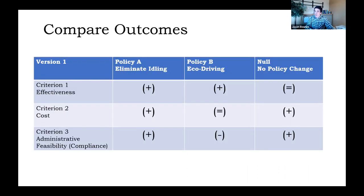Policy A scores positively on effectiveness, cost — because it's basically free — and administrative feasibility. Policy B is effective but cost-neutral since it requires some investment, and in terms of compliance we can expect it won't perform super well. If we look at no policy change: effectiveness stays the same as today, cost is free since it doesn't cost anything not to make changes, and compliance is easy to expect since nothing is changing.